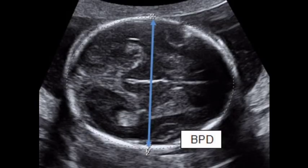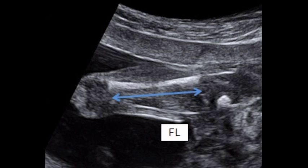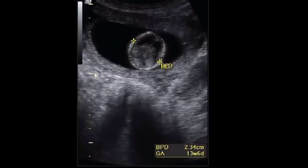Is biparietal diameter accurate during the third trimester? The biparietal diameter in the third trimester is not reliable and becomes less useful when the patient passes 30 weeks. In those cases, the biparietal diameter has to be combined with other measurements when taken in later trimesters, to emphasize the normal growth of the fetus and avoid incorrect ultrasound measurements.